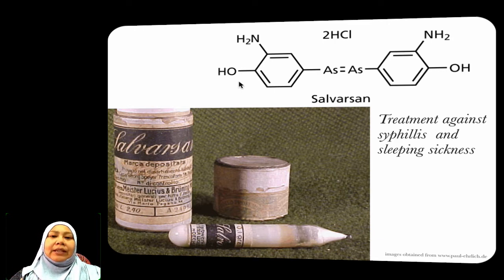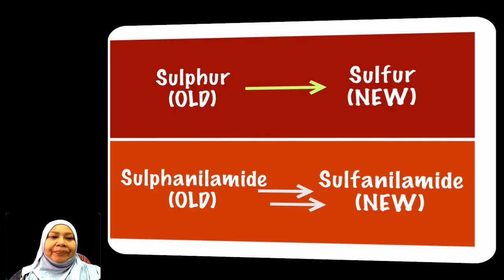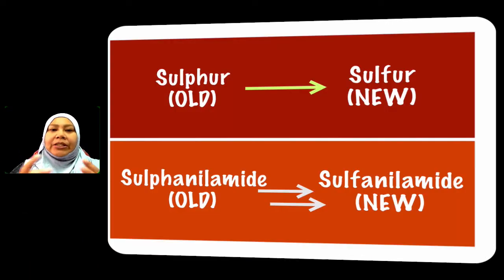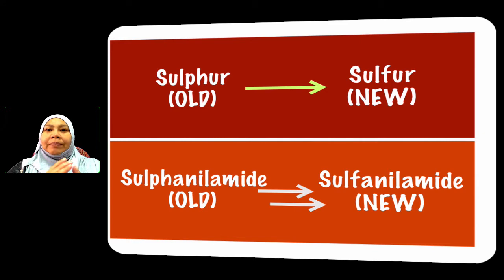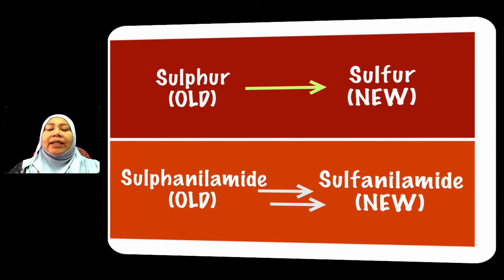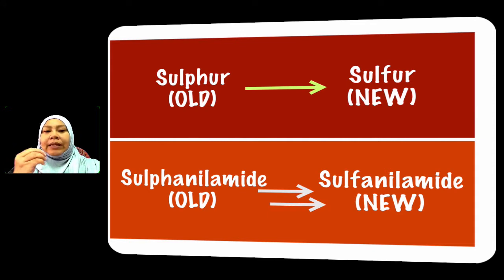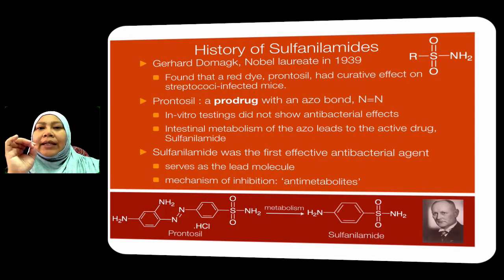It is a dimer of these hydrochloride salts. Regarding naming convention: the old convention spells sulfur as S-U-L-P-H-U-R, but the new convention replaces the PH with F. The same goes for sulfonamide. You can use the new convention, replacing PH with F. Let's now take a look at the history of sulfonamides.